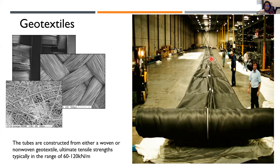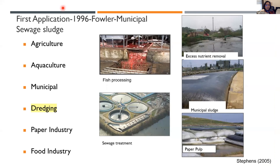The first use of geotextile for dewatering applications happened almost 25 years ago by Paul Pauler for municipal sewage sludge dewatering. Since then, thousands of projects worldwide have used geotextiles of different sizes for agriculture, aquaculture, municipal, paper industry, food industry, and fly ash dewatering. Today's presentation focuses on sediments dredged from ponds, lakes, and rivers.